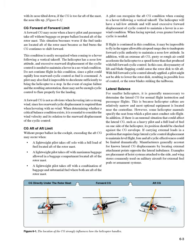Figure 6-1: CG forward of forward limit. A forward CG may occur when a heavy pilot and passenger take off without baggage or proper ballast located aft of the rotor mast. This situation becomes worse if the fuel tanks are located aft of the rotor mast, because as fuel burns the CG continues to shift forward. This condition is easily recognized when coming to a hover following a vertical takeoff: the helicopter has a nose low attitude, and excessive rearward displacement of the cyclic control is needed to maintain a hover in a no-wind condition. Do not continue flight in this condition, since a pilot could rapidly lose rearward cyclic control as fuel is consumed.